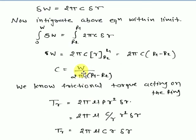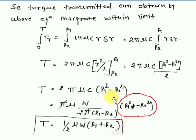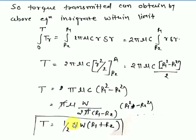Now substituting C = W / (2π(r1 - r2)) and factoring r1² - r2² = (r1 + r2)(r1 - r2): the 2π terms cancel with π, the (r1 - r2) factors cancel, and the final torque equation by uniform wear theory is: T = (1/2) × μ × W × (r1 + r2).